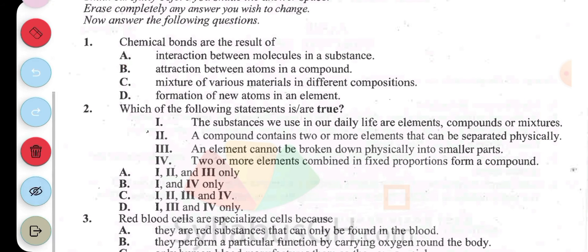Question 2: which of the following statements are true? I, the substances we use in our daily life are elements, compounds, or mixtures. II, the compound contains two or more elements that can be separated physically. III, an element cannot be broken down physically into smaller parts. IV, two or more elements combined in fixed proportions form a compound. Looking at them, I is correct, III is also correct, IV is also correct. So we have I, III, and IV. Number 2 is D.